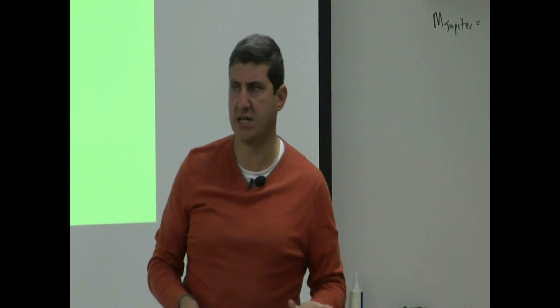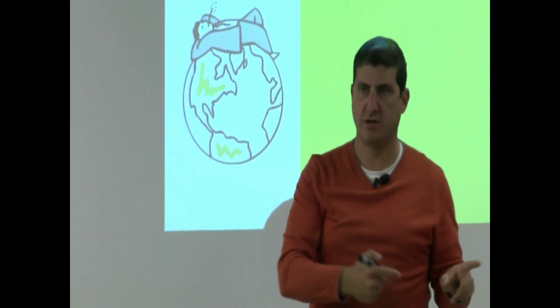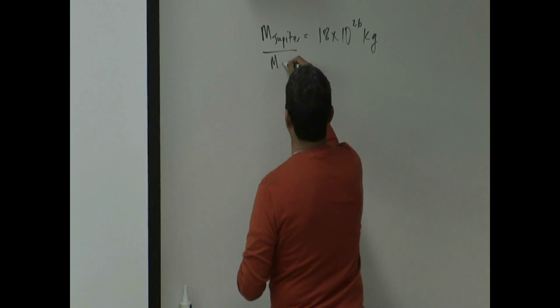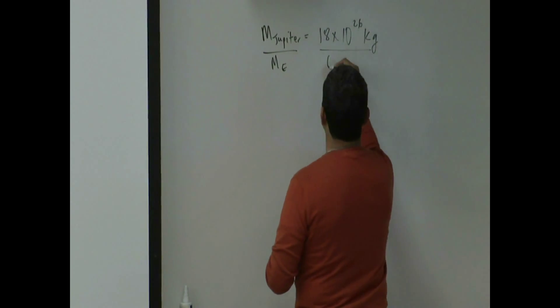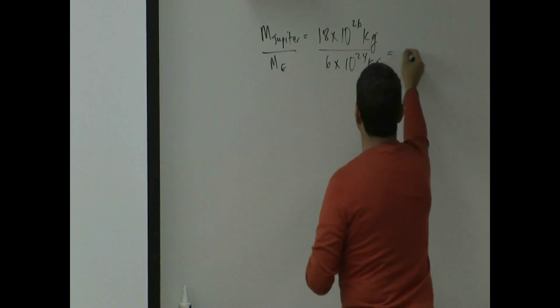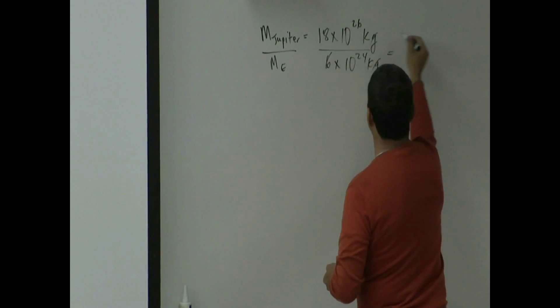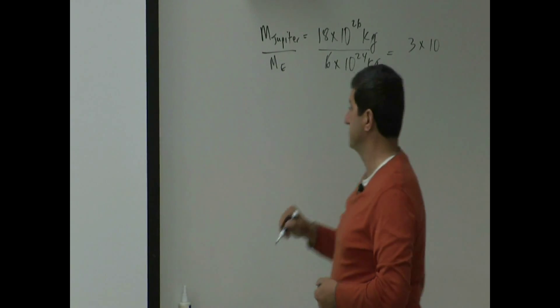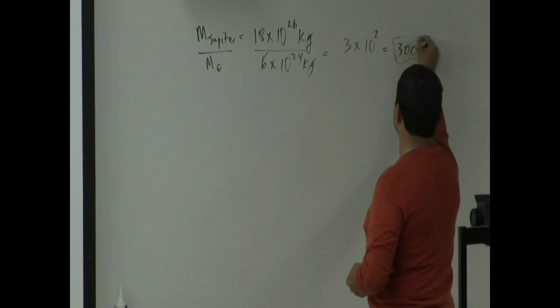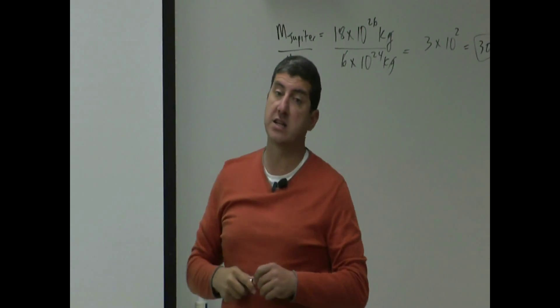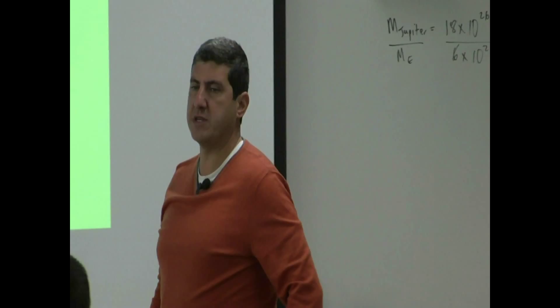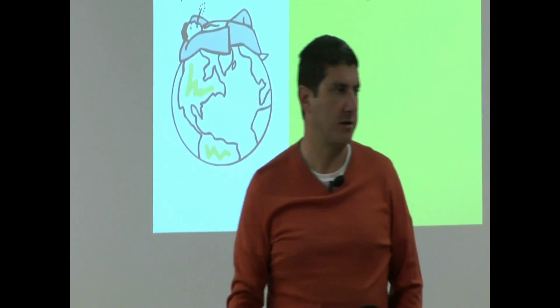Usually, if you look up data tables online, they will not only tell you the mass or the radius of something, but they will also compare to the Earth so that we have a reference frame. If I divide this by the mass of the Earth, 18 divided by 6 is 3, and 10 to the 26th divided by 10 to the 24th is roughly 100 — so the ratio is about 300.